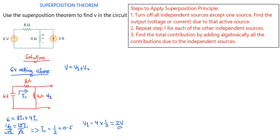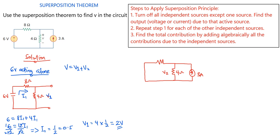Now let's find V2 by considering the current source acting alone. To turn off the voltage source, we short-circuit it. Drawing the new circuit with the short-circuited voltage source, we have the 4 ohms resistor, the 3 ampere current source, and the 8 ohms resistor, with V2 across the 4 ohms.